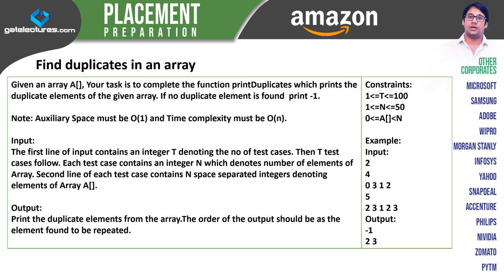Now let us see the problem. Find duplicates in an array. Given an array, your task is to complete the function print duplicates which prints the duplicate elements of the given array. If no duplicate element is found then it should print minus one.